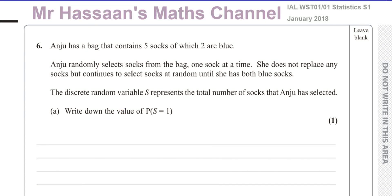Welcome back, this is Mr. Hassan's Maths channel. I'm now answering question number six from the January 2018 international A-level Statistics S1 paper from Edexcel. This question is about discrete random variables. It says Andrew has a bag.